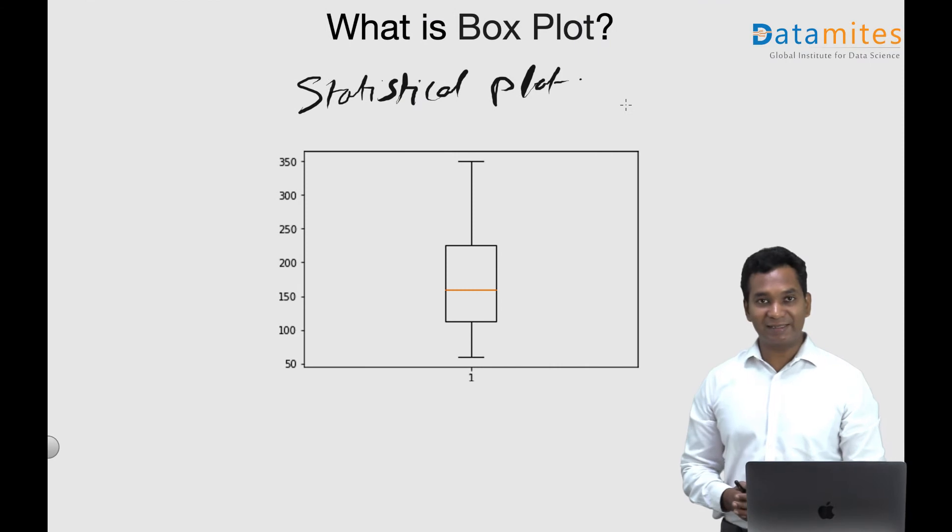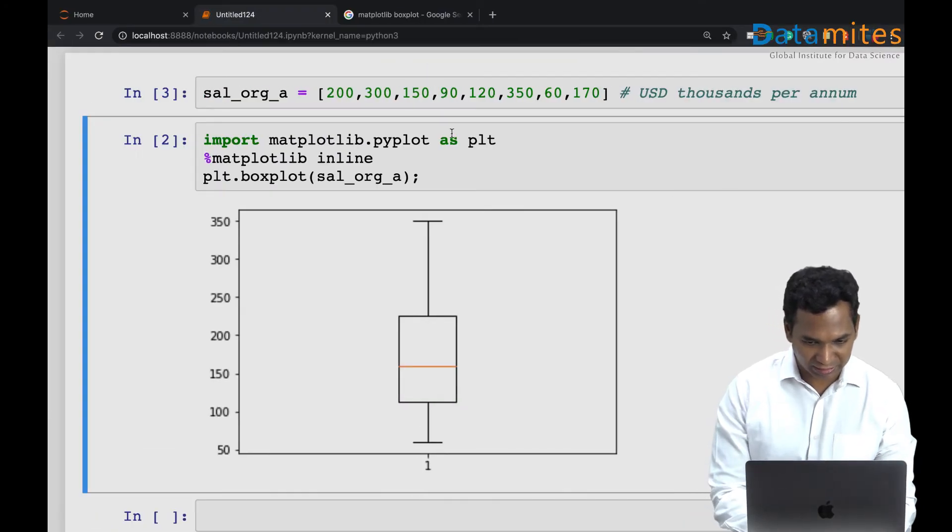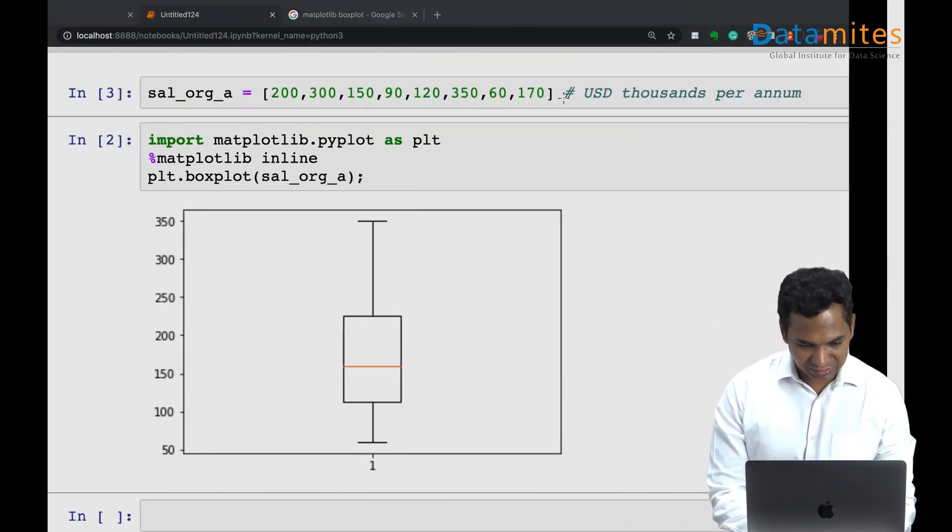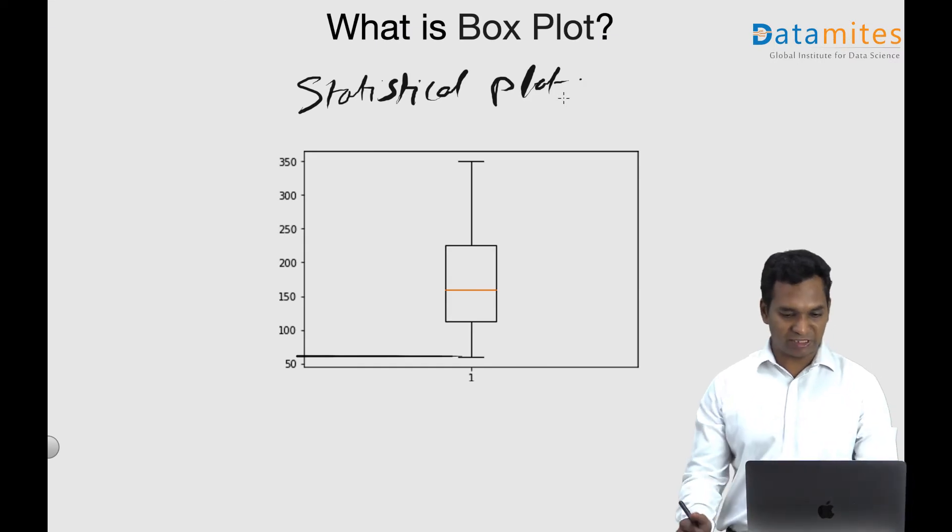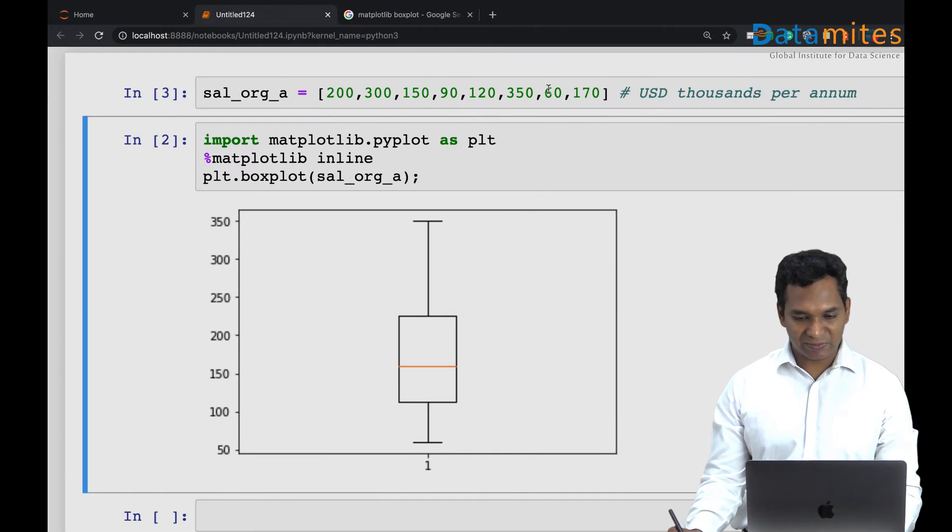By looking at this I can already say that the minimum salary - what do you have? A minimum salary of like 30, that might be an error somewhere. 60, yeah of course, 60 is the minimum. So 60 is the minimum salary and the maximum salary is 350.